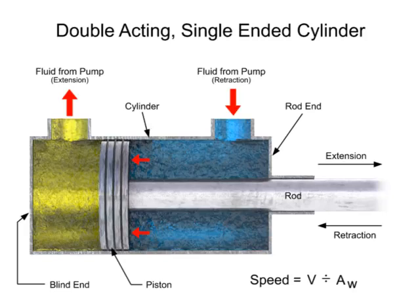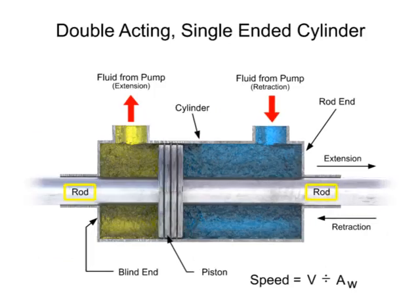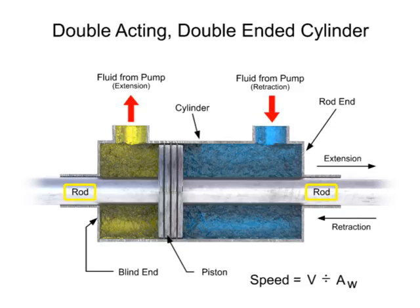All the cylinders shown to this point have been single-ended. They have only one working rod. On special cylinders, two rods may be used. These are called double-ended cylinders. They have two rods, both attached to the piston, and each coming through an end cap.